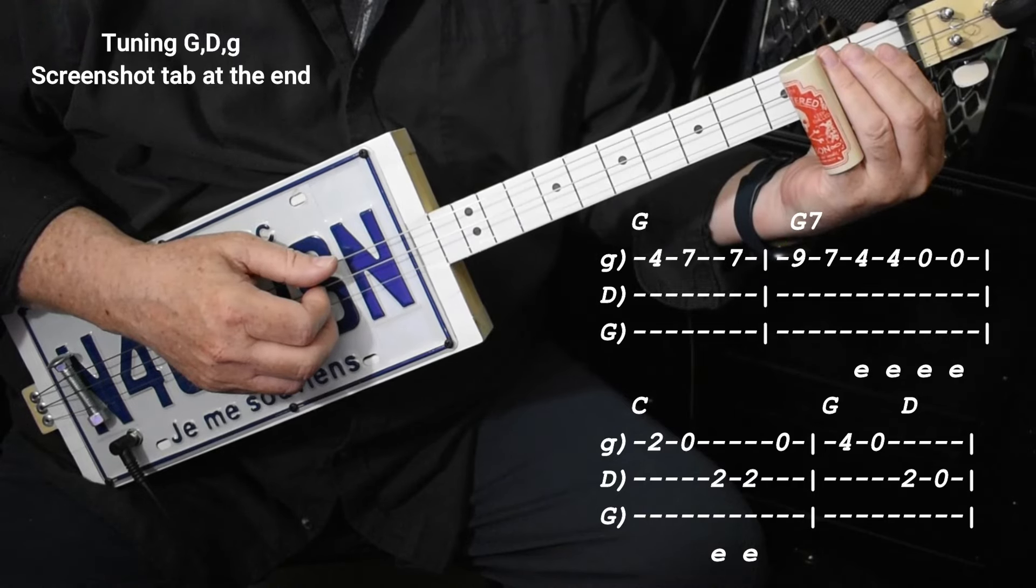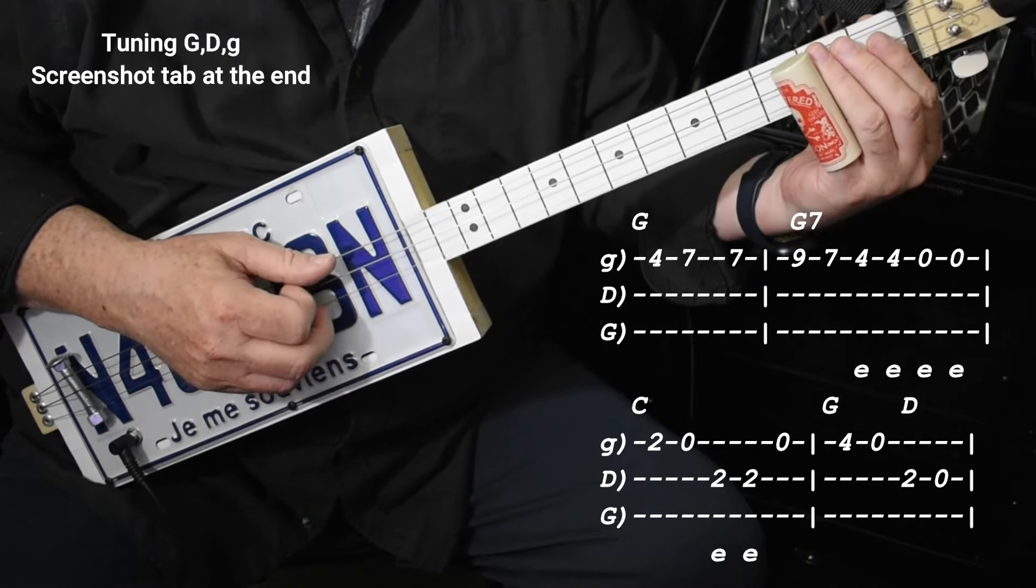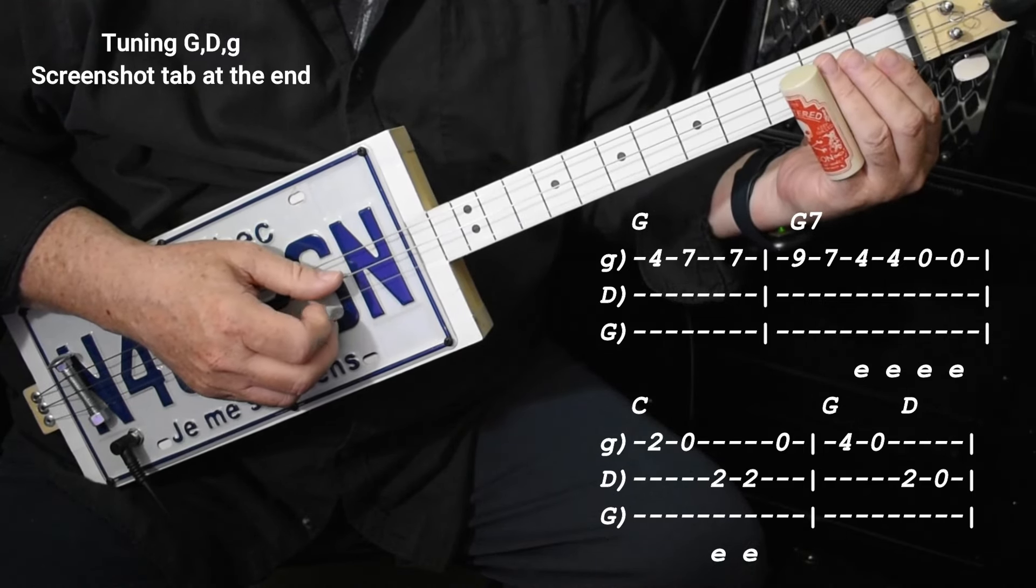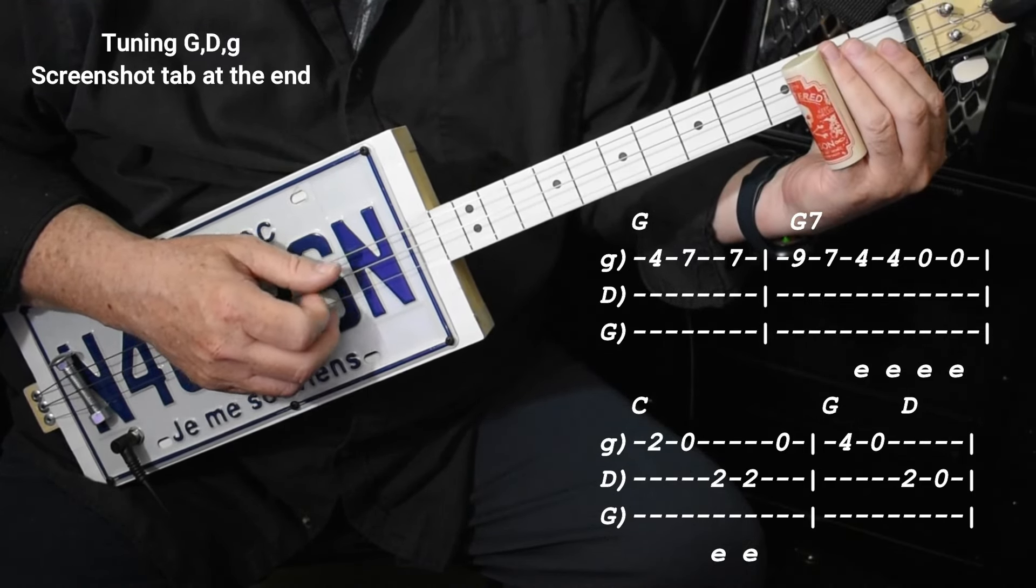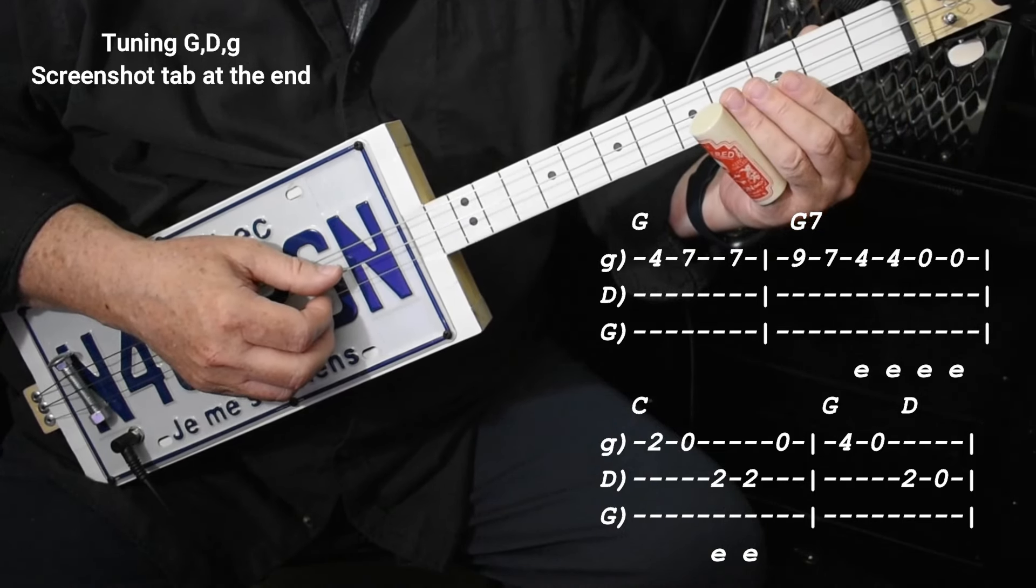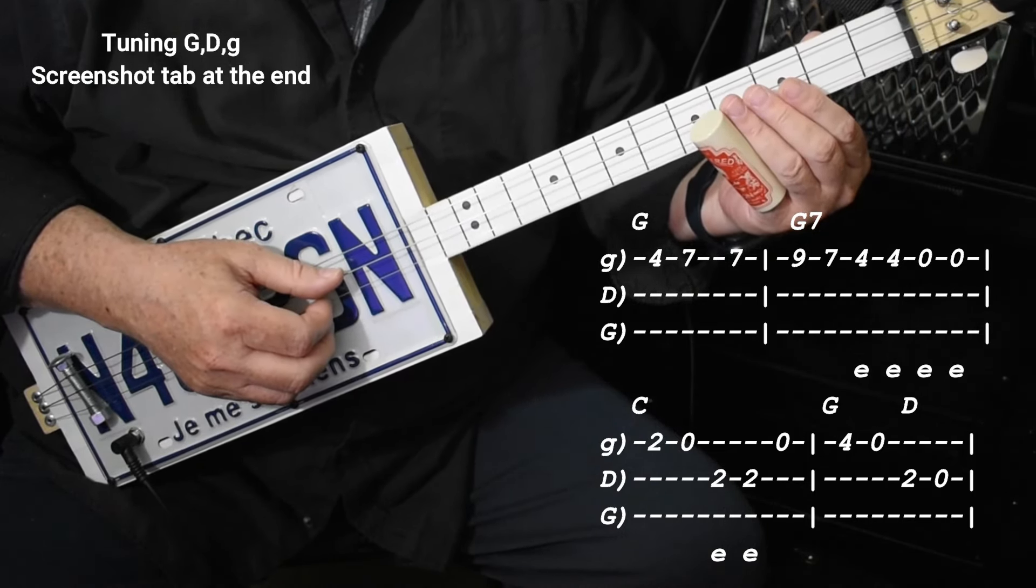Which would be 1-2, 1-2-3-and-4, 1-2-3-and-4-and. Then up to 4 on the fourth fret on the high string.